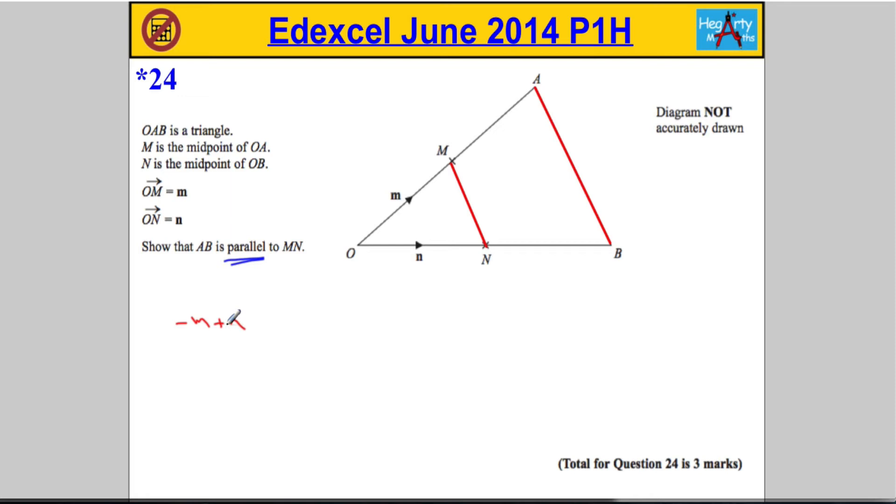So let's just write that a more appropriate way around. We'll call that n minus m, and that is the vector MN. So this is our vector from M to N is n minus m.